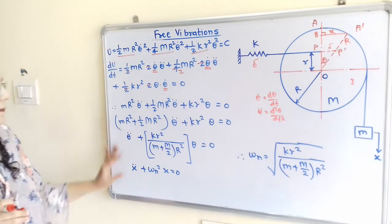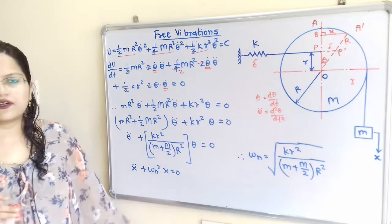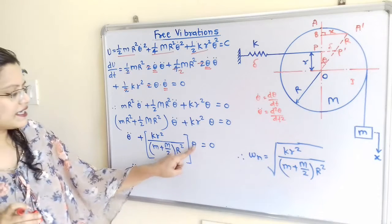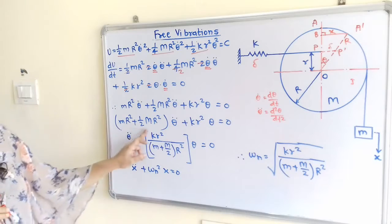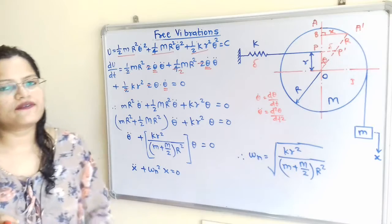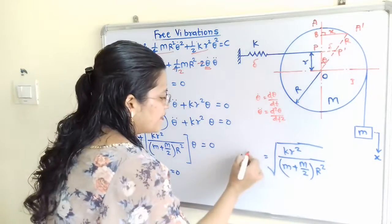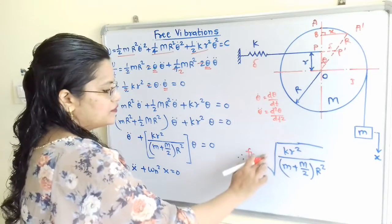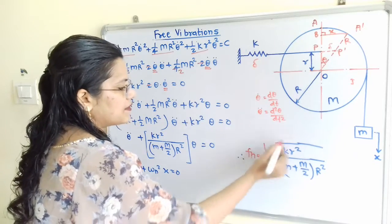Comparing this with the standard equation ẍ + ωₙ²·x = 0, where θ̈ is equivalent to ẍ and θ is equivalent to x, we can write ωₙ = √[K·r² / (m + M/2)·R²]. The natural frequency fₙ = (1/2π)·ωₙ, so fₙ = (1/2π)·√[K·r² / (m + M/2)·R²].